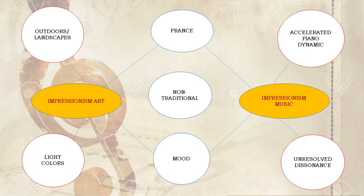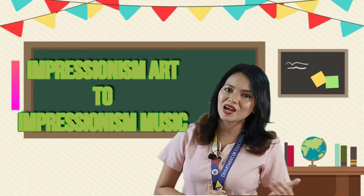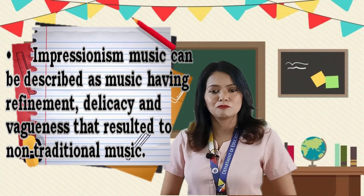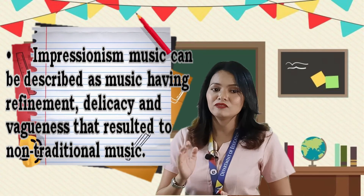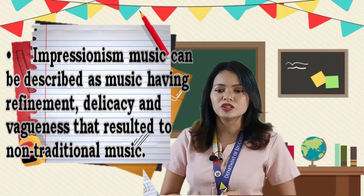The red circles show the differences of each impressionism. In impressionism art, works are painted outdoors or as landscapes, and they use light colors. In impressionism music, they use accelerated dynamics and unresolved dissonance. We have already related the influence of impressionism arts to impressionism music. Impressionism music can be described as music having refinement, delicacy, and vagueness that resulted in non-traditional music.